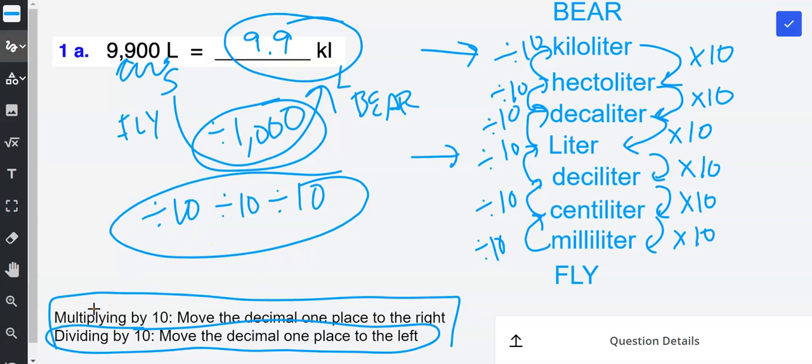So that method is very useful, moving the decimal. It makes it very fast to convert.